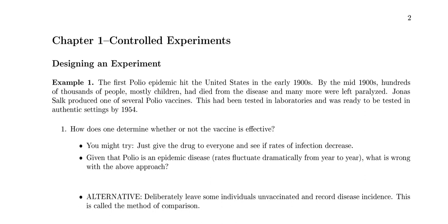For example, when the first polio epidemic hit the United States in the early 1900s, by the mid-1900s, hundreds of thousands of people, mostly children, had died from the disease and many more were left paralyzed. Jonas Salk produced one of several polio vaccines, and they were ready to test it by 1954. So the main question is: how does one determine whether or not the vaccine is effective?